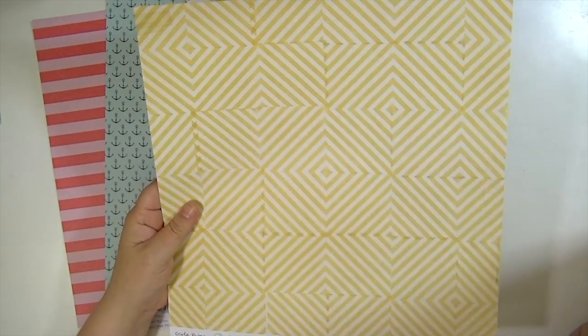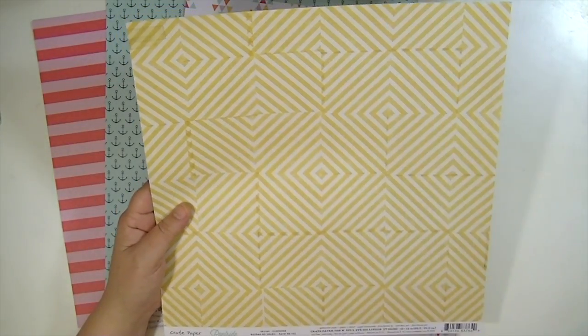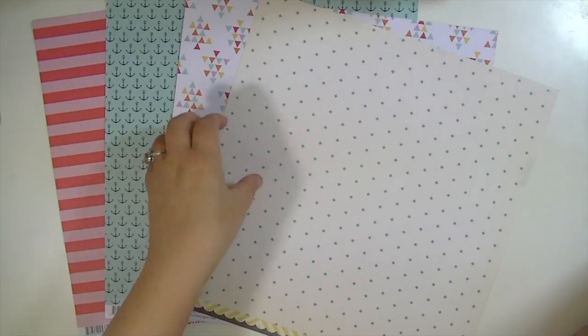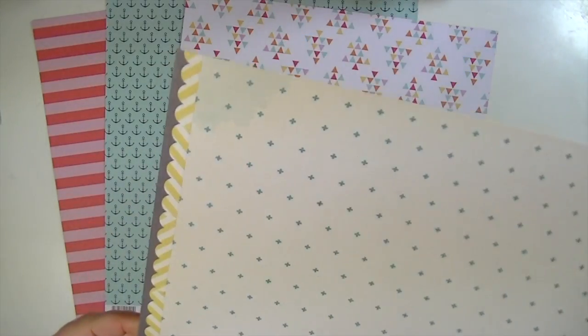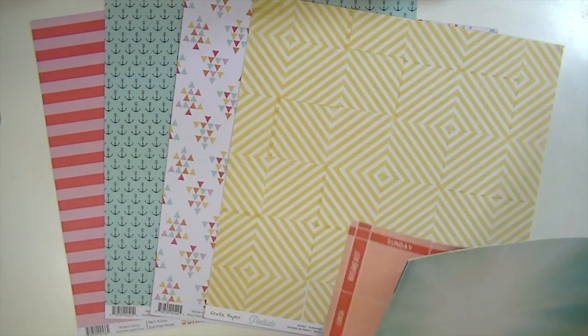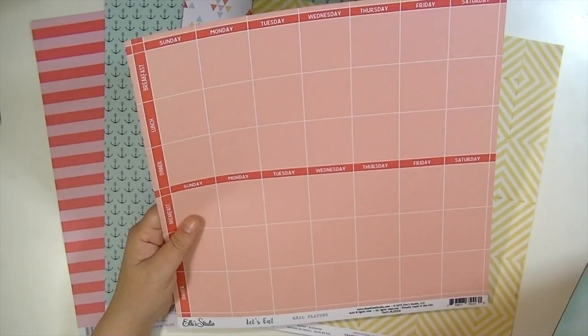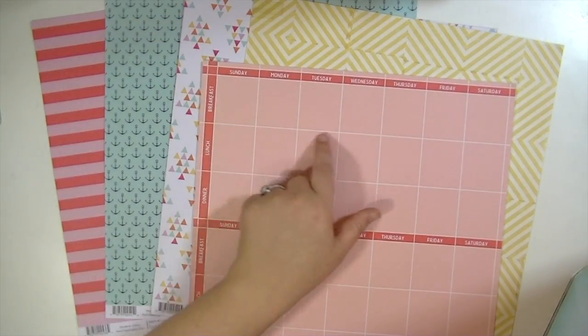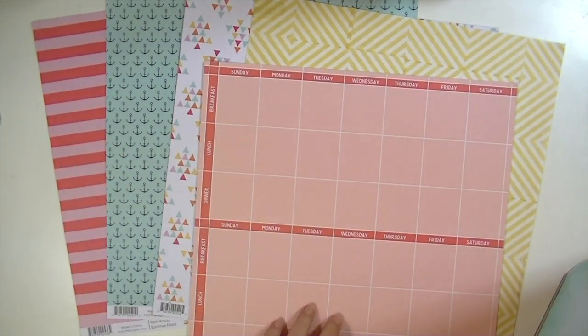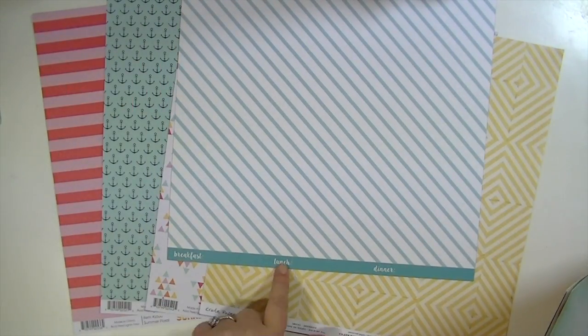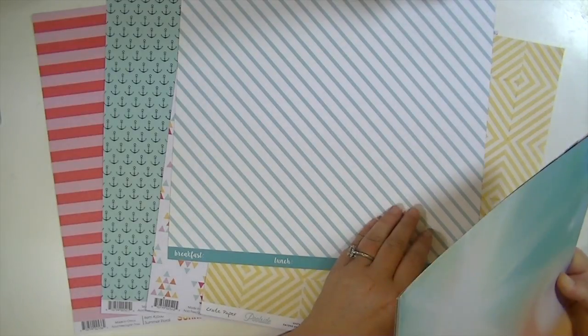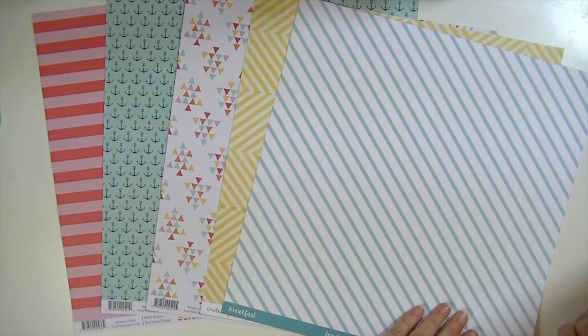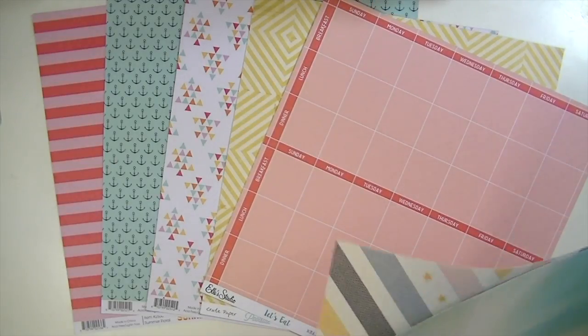This is from Crate Paper Poolside. I love this collection, and I love this paper. It kind of looks like the tops of umbrellas. It's got a little aqua plus sign, and it has a little bit of watercolor-y look on the edge. This is from LA Studio Let's Eat called Meal Planner. It's got the days of the week and then breakfast, lunch, and dinner. Do you see what I mean, how both sides work on that?